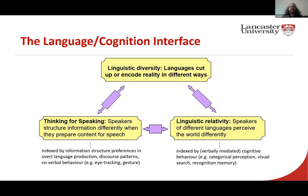One theoretical strand is the thinking-for-speaking hypothesis — the speaker structures information differently when preparing content for speech. We had talks that looked at this in terms of information structure preferences, discourse patterns, and co-verbal behavior like gesture. We also have studies in the linguistic relativity tradition, where researchers look at whether speakers of different languages perceive the world differently — indexed by cognitive behavior like categorization, visual search, recognition memory, verbal interference, and flash suppression.